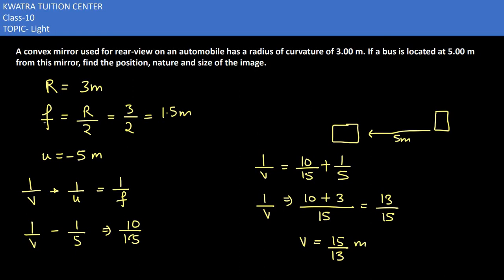So we found that v equals 15/13 meters. If you reduce this, it would be 1.15 meters. That's your value for v. Now we need to find the magnification to determine the nature and size of the image.